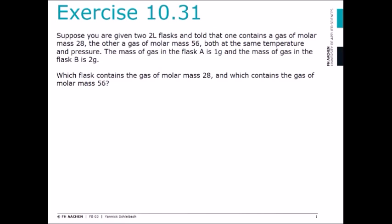The mass of gas in flask A is 1 gram and the mass of gas in flask B is 2 grams. Which flask contains the gas of molar mass 28 and which contains the gas of molar mass 56?